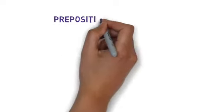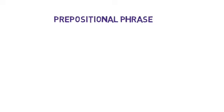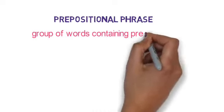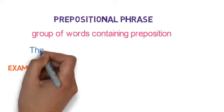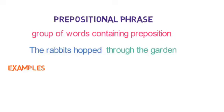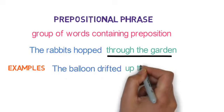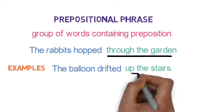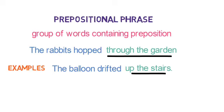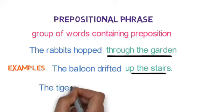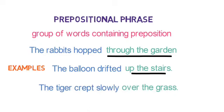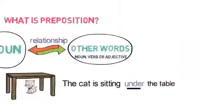Now let's move to another term related to preposition — that is prepositional phrase. A phrase is a group of words, and a prepositional phrase is a phrase that contains one preposition. For example, 'The rabbit hopped through the garden' — 'through the garden' contains the preposition 'through'. Another example: 'The balloon drifted up the stairs' — 'up' is the preposition. And 'The tiger crept slowly over the grass' — 'over the grass' contains the preposition 'over'. These three are examples of prepositional phrases.